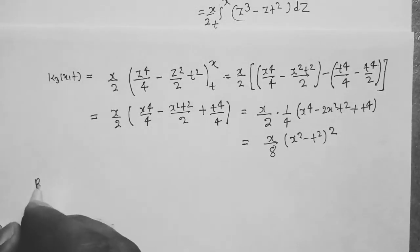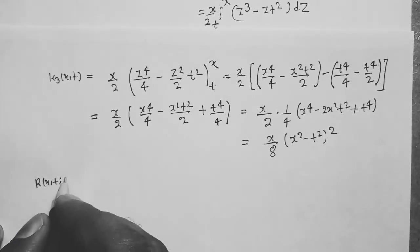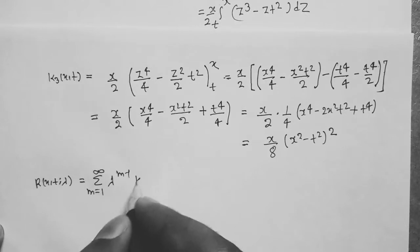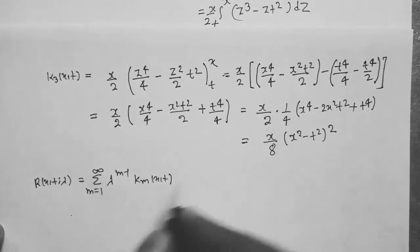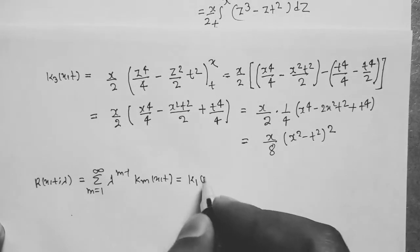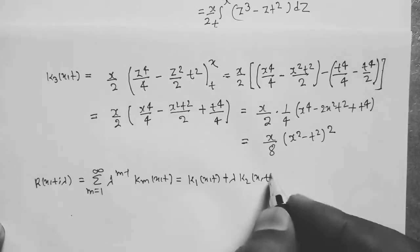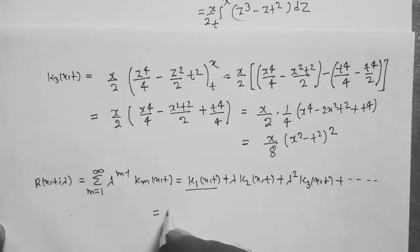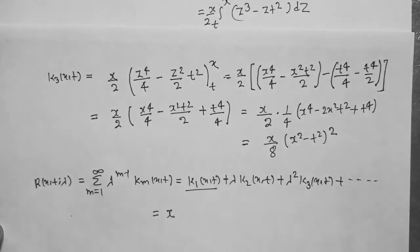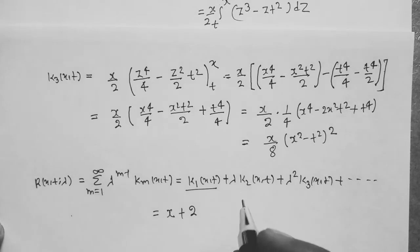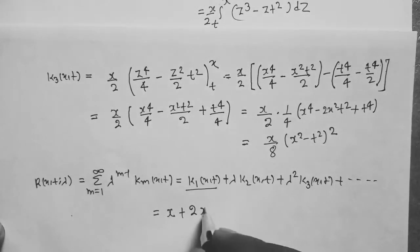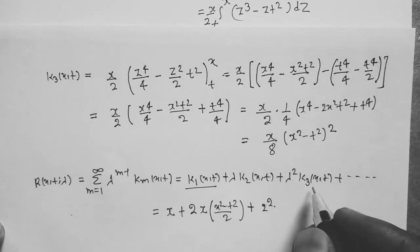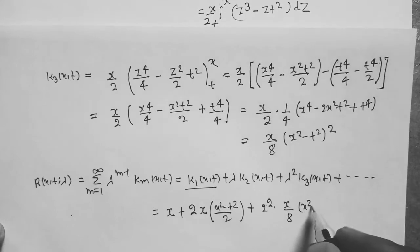The resolvent kernel R(x,t,λ) is given by the summation from m=1 to infinity of λ^(m-1)·kₘ(x,t), which equals k₁(x,t) plus λ·k₂(x,t) plus λ²·k₃(x,t) plus ... Substituting: k₁(x,t) equals x, and k₂(x,t) equals x/8·(x² minus t²)², and λ·k₃(x,t) at x/8·(x² minus t²)³ and so on.